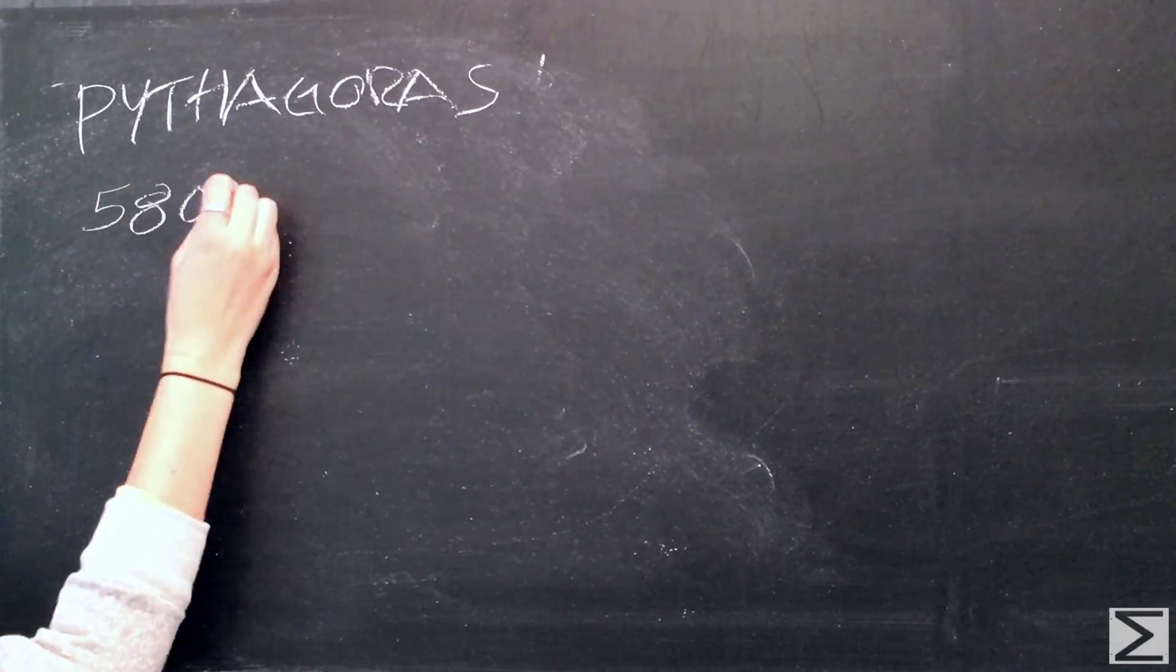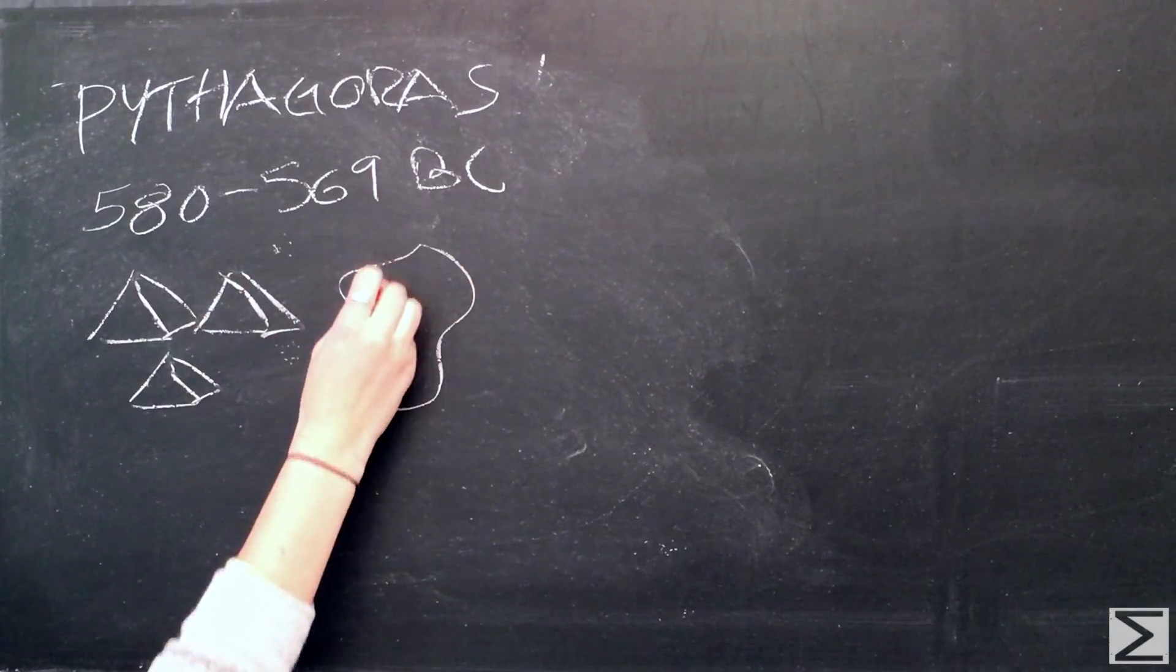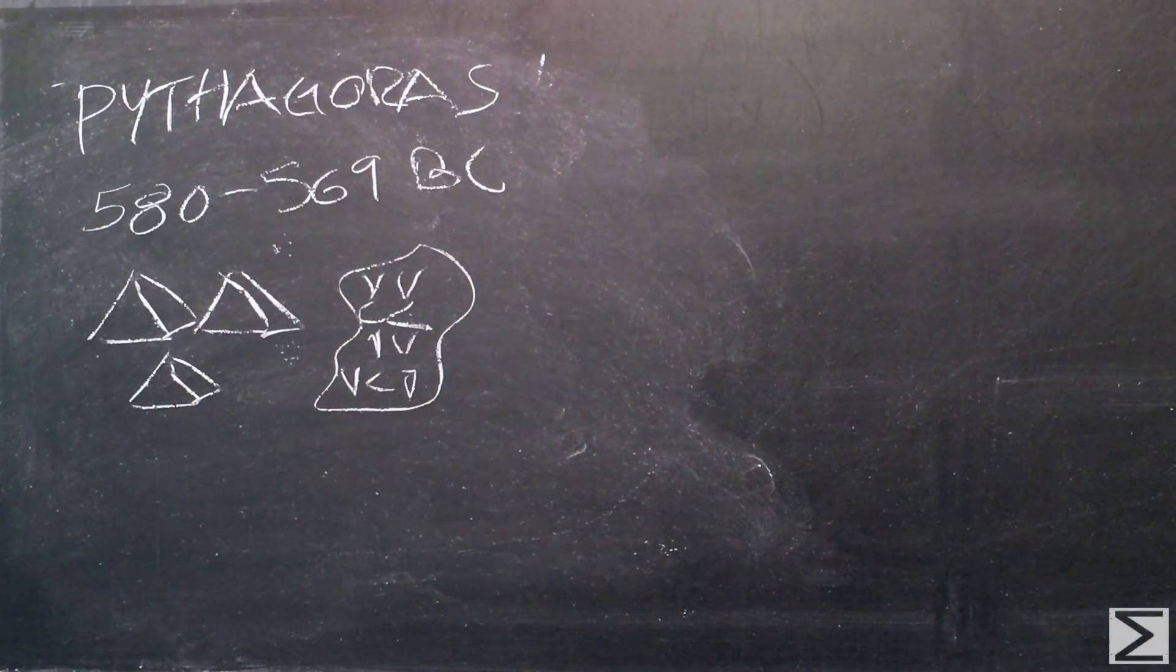Knowledge on the life of Pythagoras is limited, and there is little certainty. He was born sometime around 580 B.C. and 569 B.C. on the island of Samos.